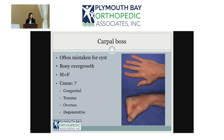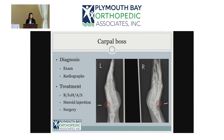Carpal boss happens in both men and women equally. The cause can be many things — some think it's congenital, or where the wrist extensor tendons insert, pulling the bone and causing that prominence. Many people see it after trauma or overuse, and degenerative changes can also cause bone spurs and that prominence in the area.